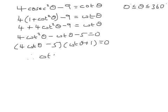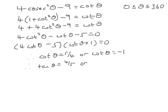So therefore cot theta is 5 quarters, or cot theta is minus 1. If cot theta is 5 quarters, then tan theta is 4 fifths, because tan theta is the reciprocal of cot theta. And the reciprocal of minus 1 is minus 1.